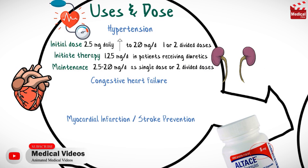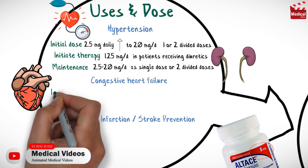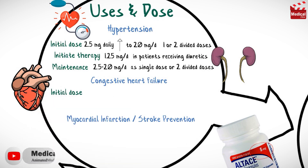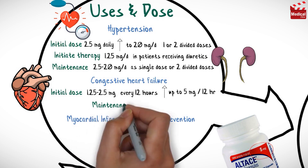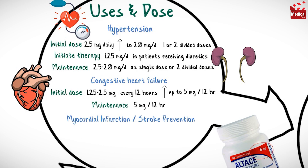The maintenance dose for hypertension is 2.5 to 20 milligrams per day as a single dose or two equally divided doses. For congestive heart failure, the usual initial dose is 1.25 to 2.5 milligrams every 12 hours, which may be increased if tolerated up to 5 milligrams every 12 hours, with a maintenance dose of 5 milligrams every 12 hours.